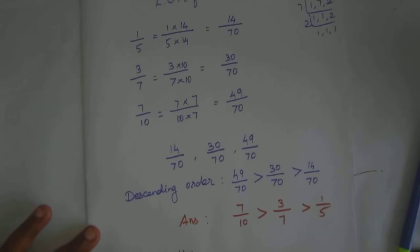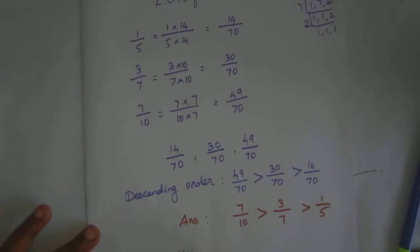Descending order. Another example: 2 by 9, 2 by 3, 8 by 21. Write in descending order.